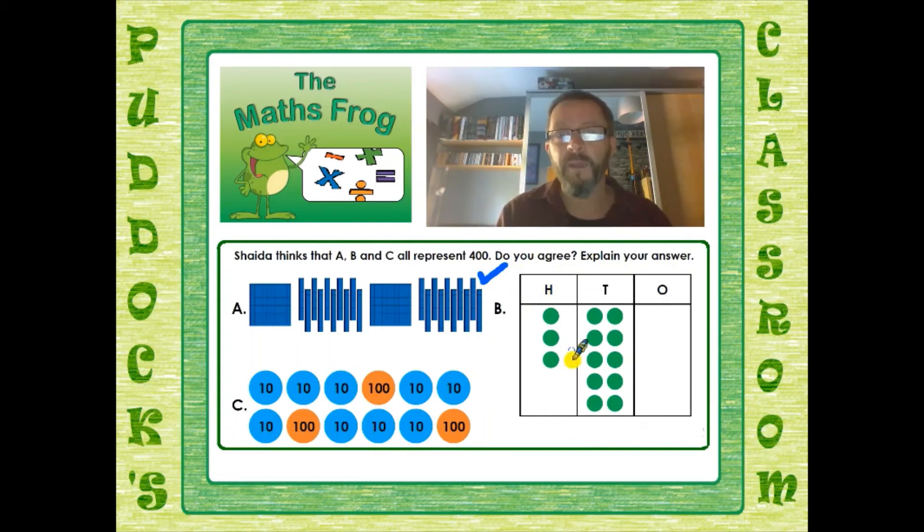Let's have a look at B. Now B has our hundreds, tens and ones columns. So our hundreds here: 100, 200, 300. Okay. But what about our tens? How many tens have we got? Have we got enough tens to make that other 100? 10, 20, 30, 40, 50, 60, 70, 80, 90, 100. So I've got 100 here, 100, 200, 300, 400. So yes, B is also going to get a tick because that is 400.